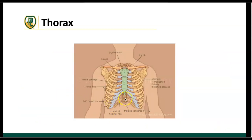Ribs 11 and 12 are floating, meaning they don't attach to the anterior sternum. The reason we have ribs 11 and 12 is because posteriorly we have two internal organs — the kidneys — that sit relatively low. The major role of the floating ribs is protectionary: to protect those kidneys as they sit in the posterior aspect of our abdominal cavity.